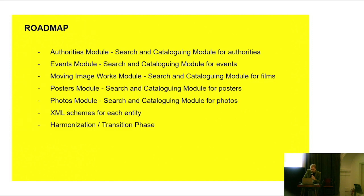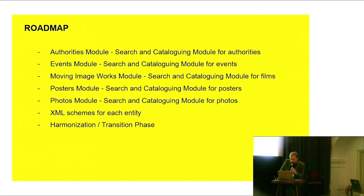This is our roadmap. We will develop one module after another: authorities module, events module, film module for moving image works, posters module, photos module, XML schema at the end, and there will be a harmonization and transition phase. It is hard to say when we will create the first cataloging record — possibly after the third module — but we will see how it all goes.